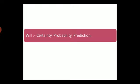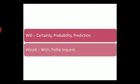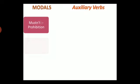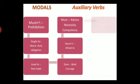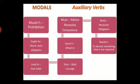'Would' is used to denote wish and polite request — 'Would you like to have a cup of tea?' 'Must' is used to denote advice, necessity, and compulsion — 'You must attend classes regularly', 'You must complete your homework in time', 'You must complete all your activities in time'. 'Must not' denotes prohibition — 'You must not go there, that place is dangerous'.